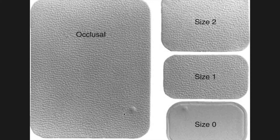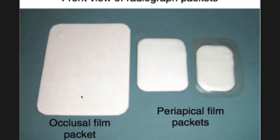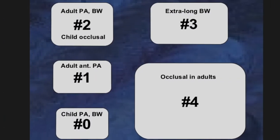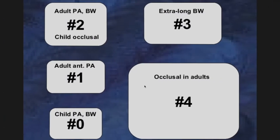According to their uses, we have intraoral periapical films and occlusal films. Their sizes are different: size 0, 1, 2, 3, and 4. Size 4 is basically for adults only and cannot be used for children. We have sizes 0 and 1 for children, and sizes 2 and 3 for adults.